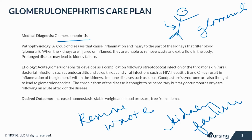Acute glomerulonephritis develops as a complication following streptococcal infection of the throat or skin, although this is rare. Bacterial infections such as endocarditis and strep throat, and viral infections such as HIV, hepatitis B and C, may result in inflammation of the glomeruli. Immune diseases such as lupus or Goodpasture syndrome are also thought to lead to this issue. The chronic form is thought to be hereditary, but may occur months or years following an acute attack.